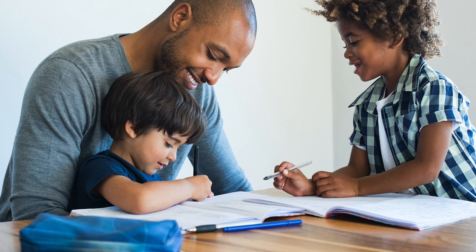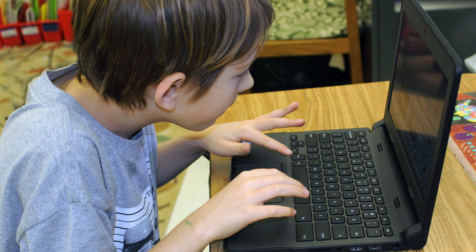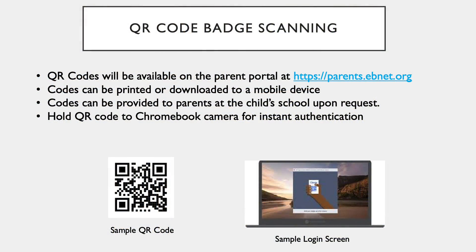For example, a kindergarten student may not yet read independently and may need help with tricky words, or he or she may play a math game that requires a partner. These activities can be completed at a time outside of the school day if needed. For the 2020-21 school year, we are implementing a system that will allow for a simpler login process for our younger learners in grades 2 and below. This system will allow you to easily log these students into their Chromebook using a QR code from Parent Access. The code can either be printed or downloaded onto a smartphone.